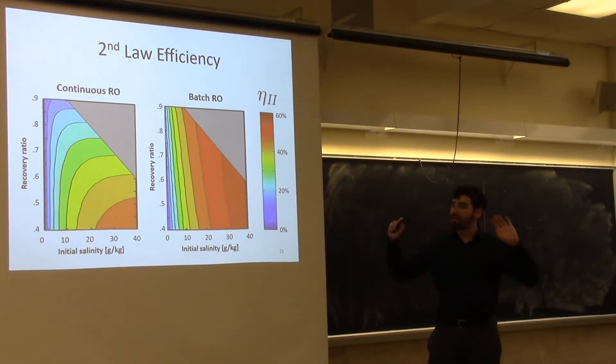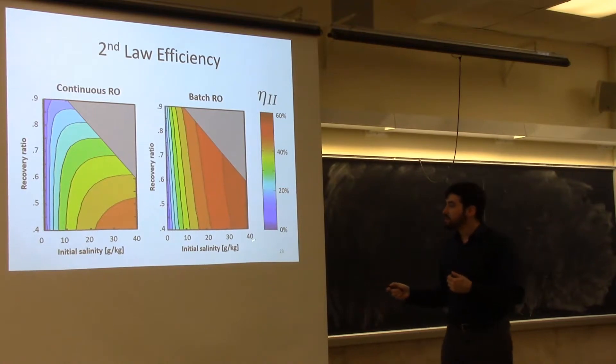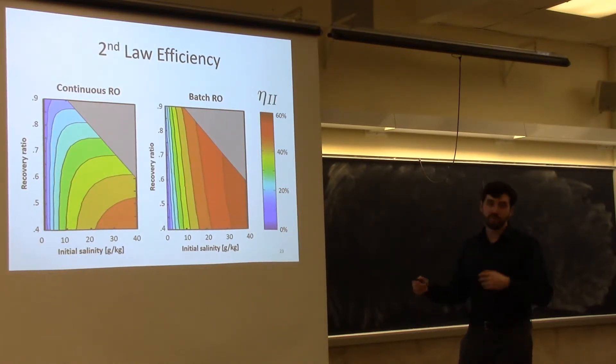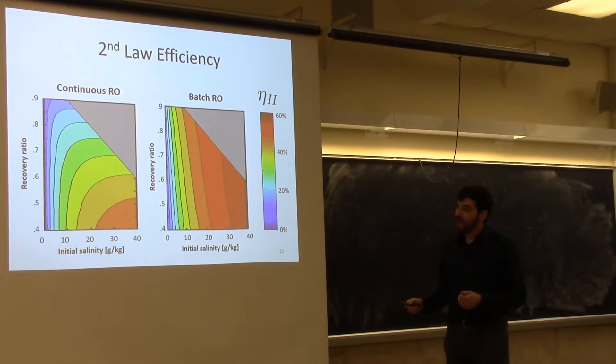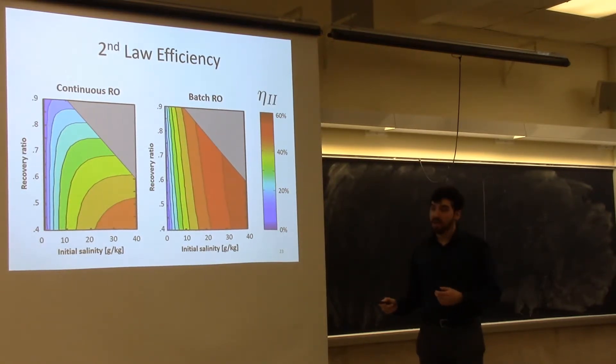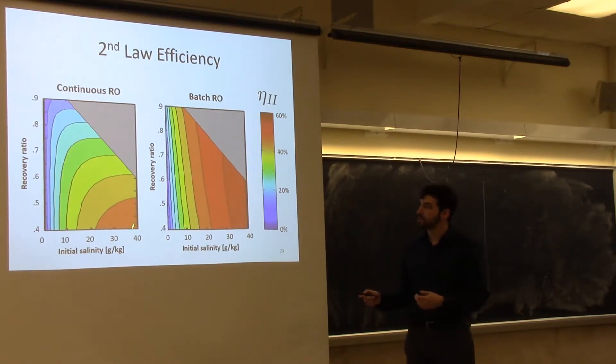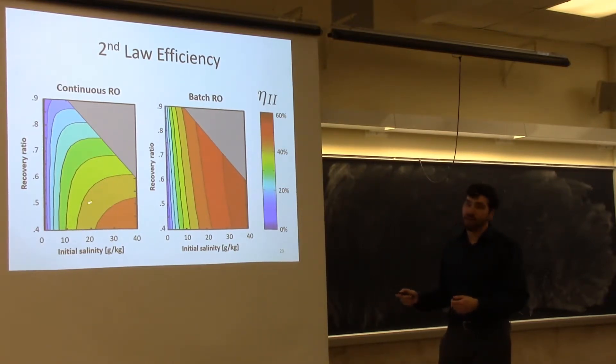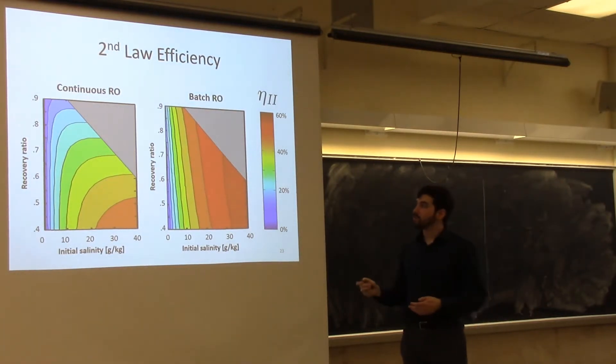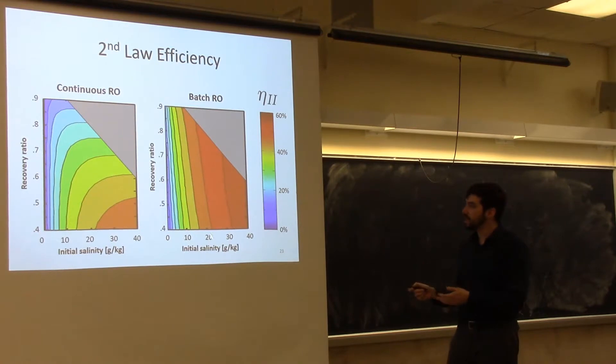This is a contour map that maps the initial salinity as a function of this recovery ratio, comparing continuous RO to these new batch RO designs. You can see here that, especially at higher recovery, our second law efficiency is vastly better. This is assuming the continuous RO has energy recovery on the brine. Those systems get a lot less efficient at higher recovery ratios because they have so much excess driving pressure, especially early on in the modules. Whereas, we are exactly matching our applied pressure to the current salinity. So we actually get improving second law efficiencies at higher recovery ratios.